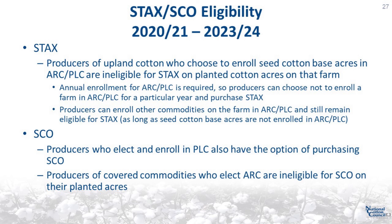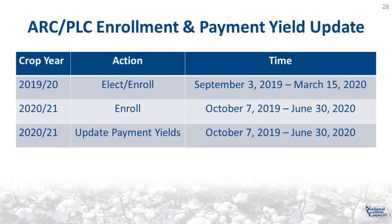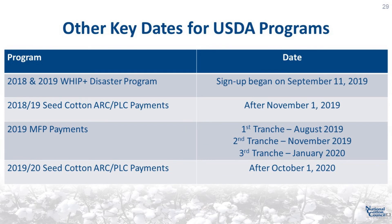Producers who elect and enroll in PLC also have the option of purchasing SCO. Producers of covered commodities who elect ARC are ineligible for SCO on their planted acreage. The ARC and PLC election and enrollment for the 2019-20 crop year began on September 3rd and ends on March 15, 2020. The enrollment period for the 2020-21 crop year and the PLC payment yield update begins on October 7th, 2019 and ends on June 30th, 2020. Owners and operators can choose to complete all of these actions at the same time and reduce trips to the FSA office.